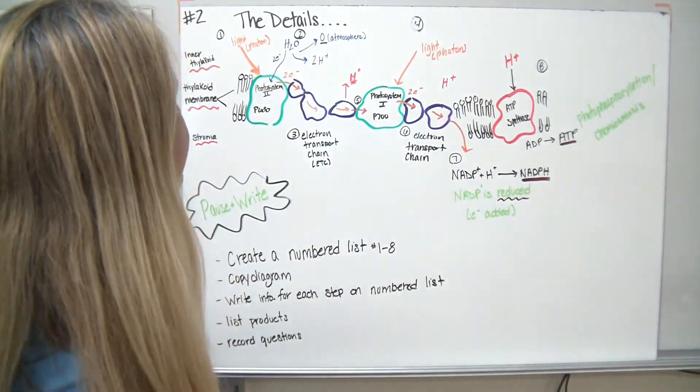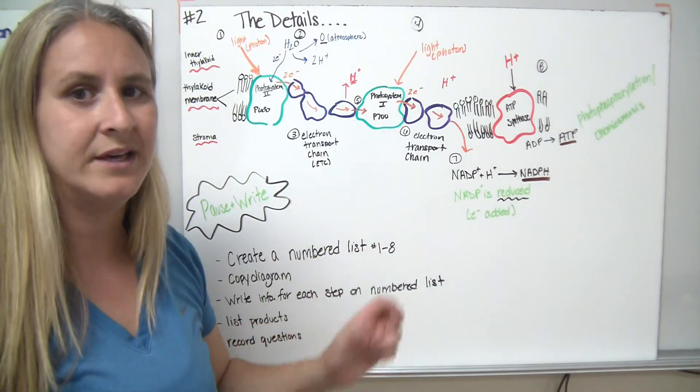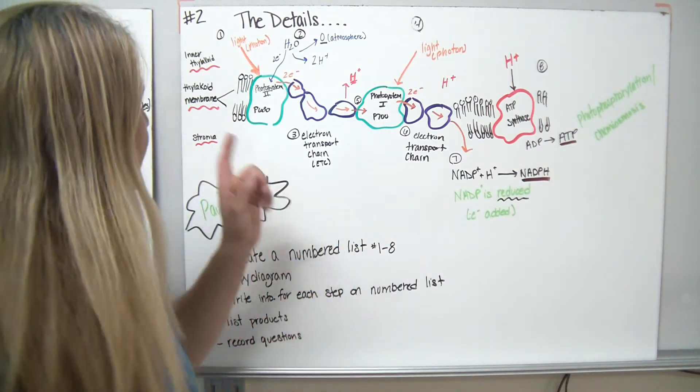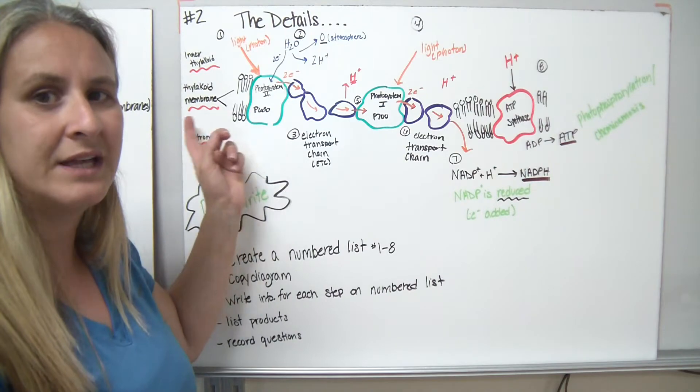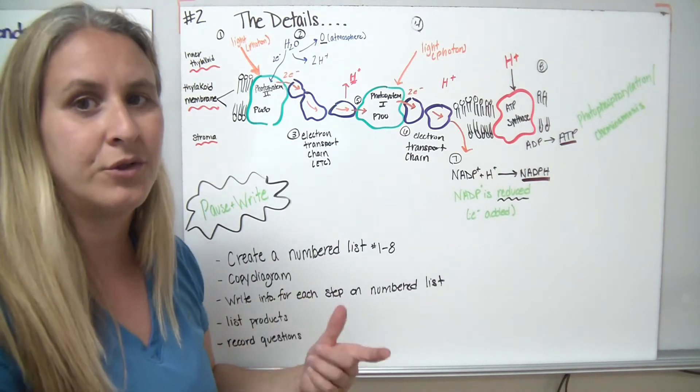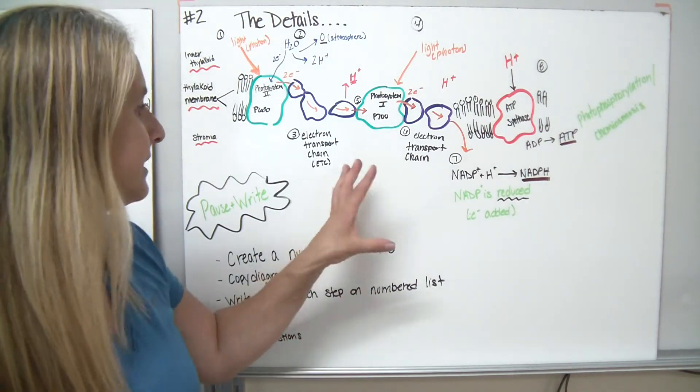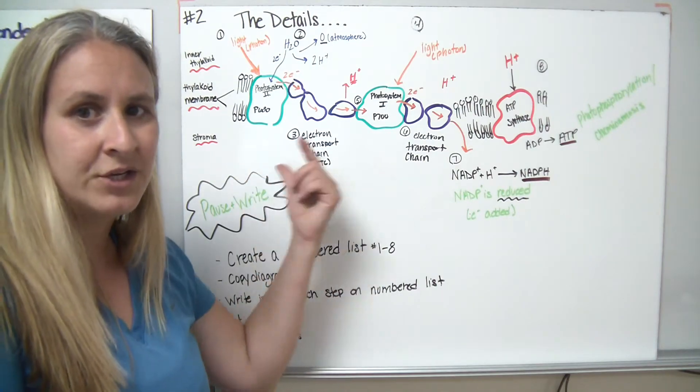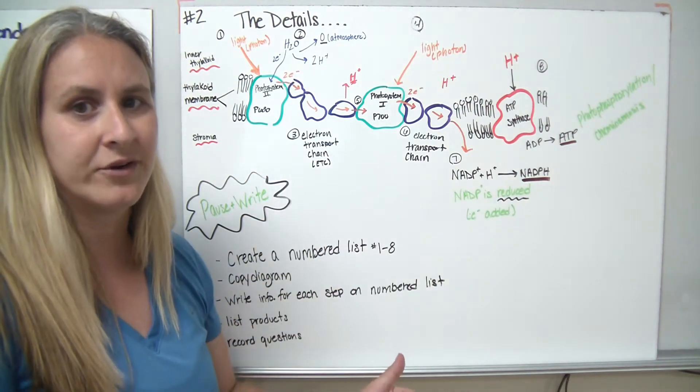So let's see what this looks like. I know this looks a little scary at first. These are the details of what's actually happening inside that thylakoid membrane of the chloroplast. So what I'd like you to do is I'd like you to pause this slide and I'd like you to write down what you see in this diagram. Transfer it.